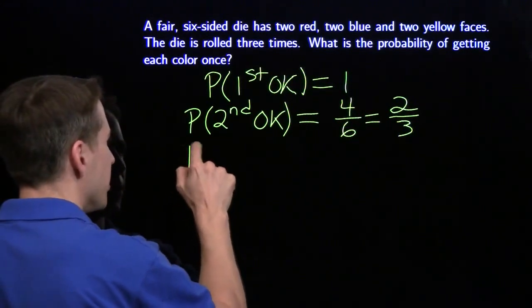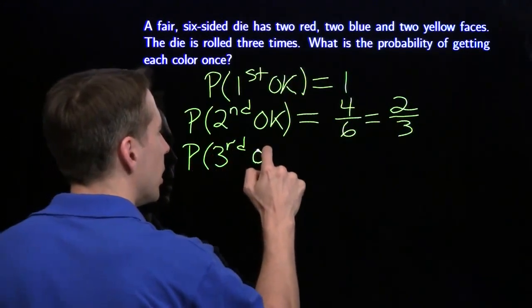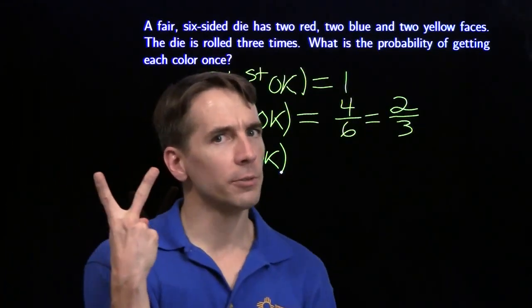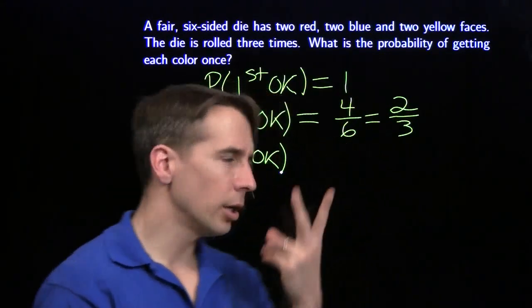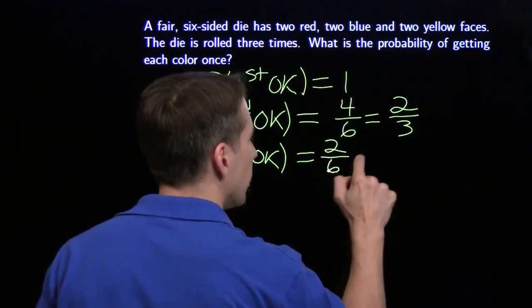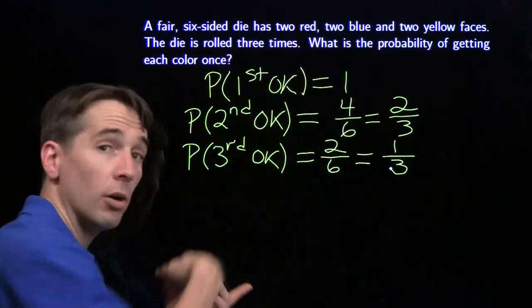Then we have to get past the third step. Now, we only get to the third step if we get past the first two steps, which means we have two different colors in the first two steps. That leaves us one color for the third step. One color is two good faces out of the six remaining for a probability of one-third.